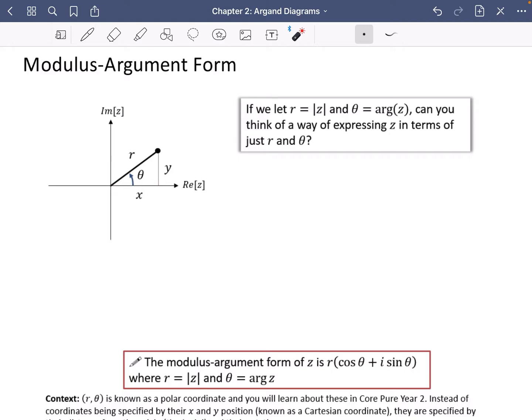We need to figure out what x and y are, because normally z equals x plus iy. So if we can change x and y into something in terms of r and theta, then we've been able to express it in terms of just its modulus and its argument.